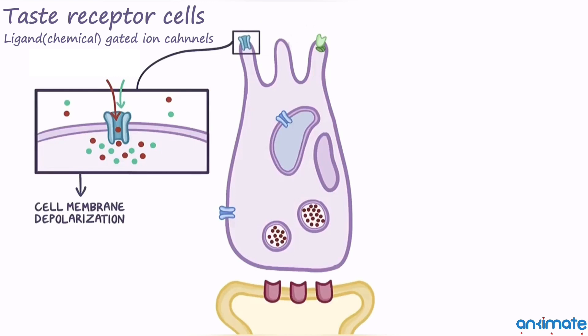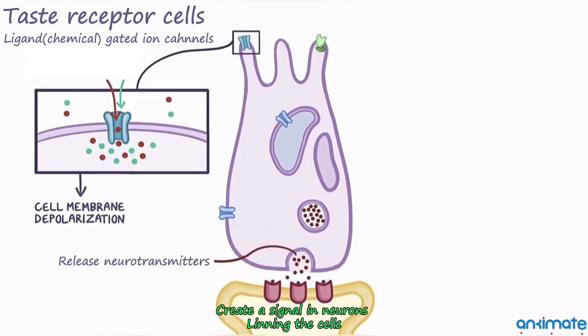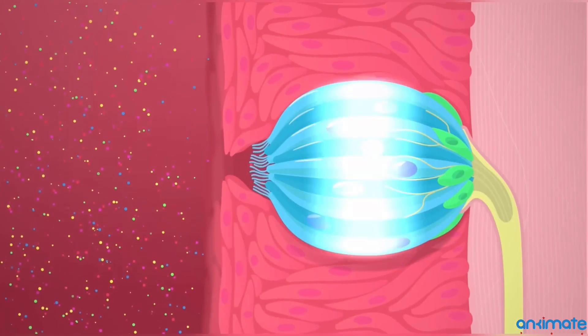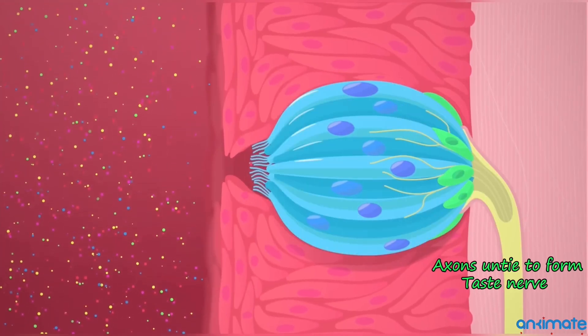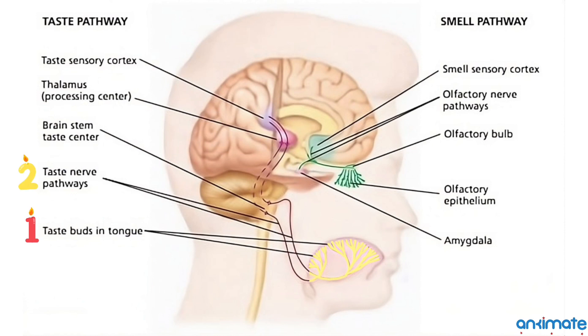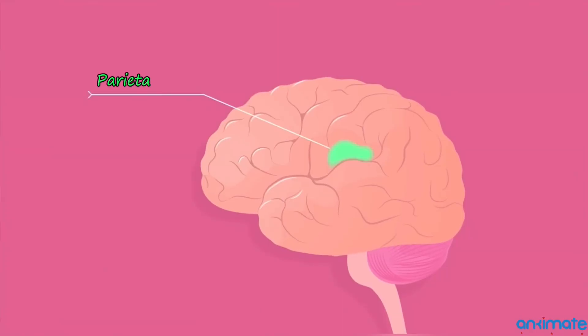The taste receptor cells send signals that travel to the brainstem and eventually to the cortex for interpretation of taste.